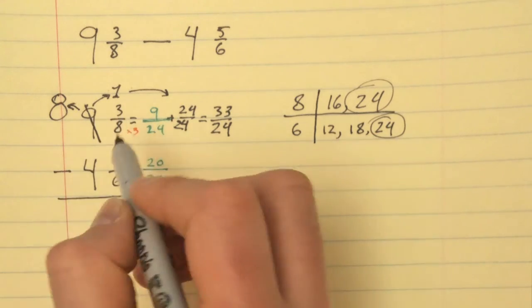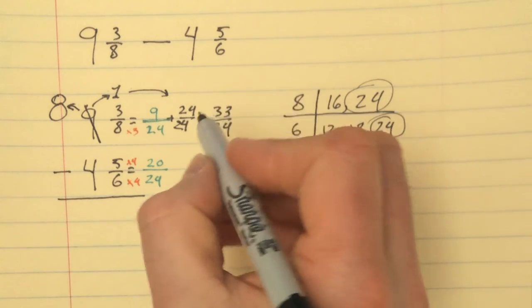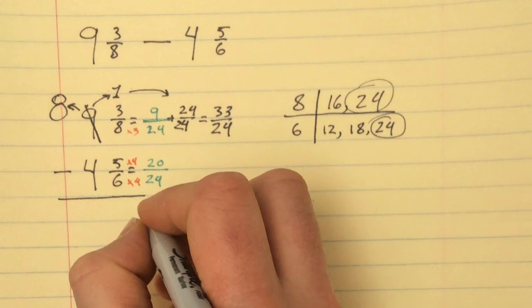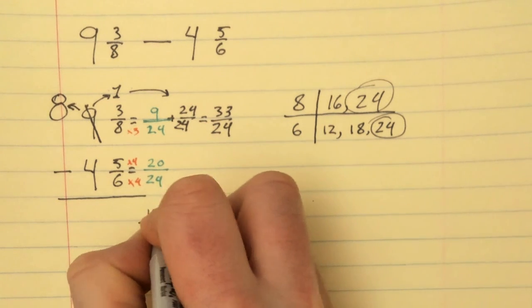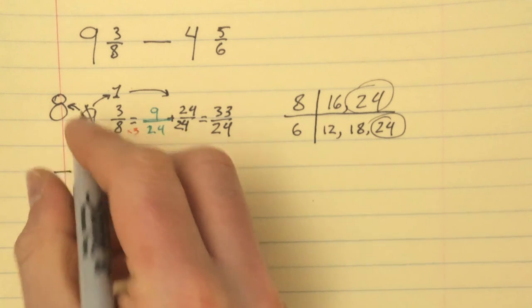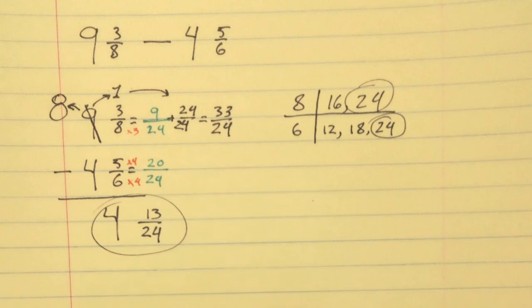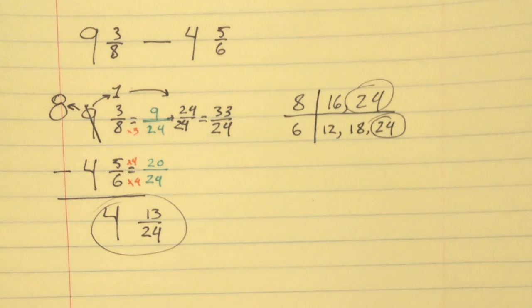33/24 minus 20/24 is 13/24, and then 8 take away 4 is 4 wholes. That would be our answer: 4 and 13/24.